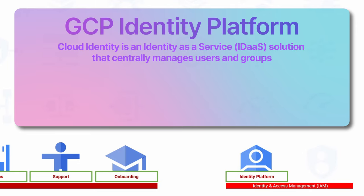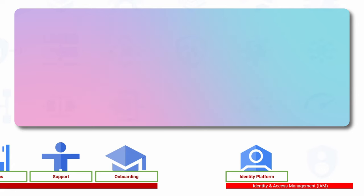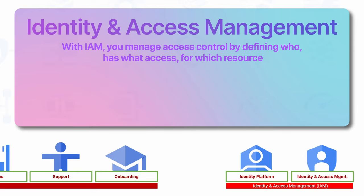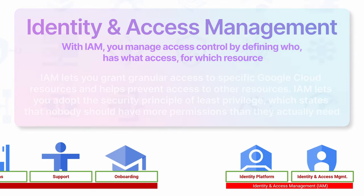Cloud Identity is an Identity-as-a-Service solution that centrally manages users and groups. Cloud Identity can also federate identities from other providers, such as Active Directory and Azure Entra ID. You can then use Identity and Access Management to manage access to Google Cloud resources. With IAM, you manage access control by defining who has what access for which resource. IAM lets you grant granular access to specific Google Cloud resources and helps prevent access to other resources, adopting the security principle of least privilege, which states that nobody should have more permissions than they actually need.